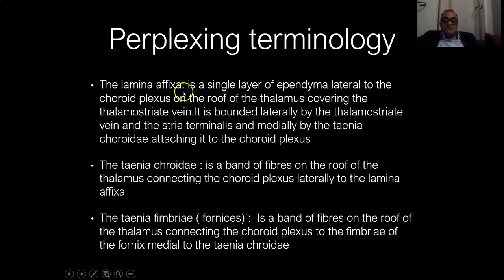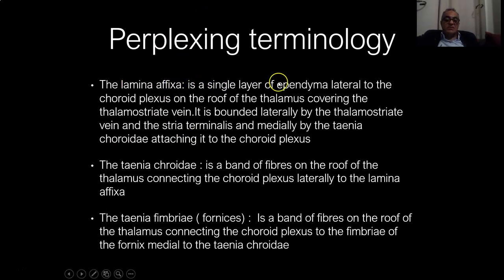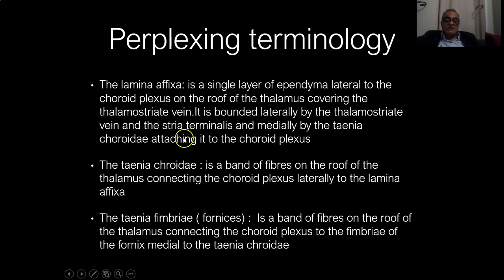Other perplexing terminology is the lamina affixa. It is a single layer of ependyma just lateral to the choroid plexus in the lateral ventricle, on the roof of the thalamus, covering the thalamostriate vein. It is bounded laterally by the thalamostriate vein and the stria terminalis, and medially by the taenia choroidea attaching it to the choroid plexus.